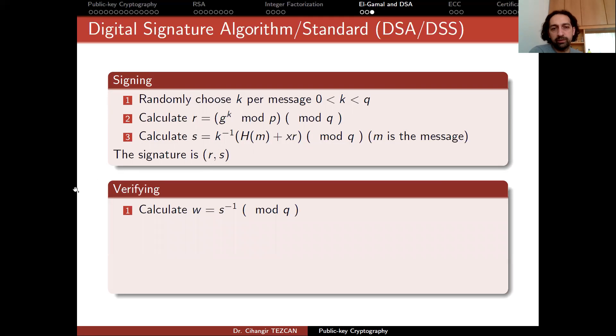The person who wants to verify does the following. They calculate the S inverse modulo Q and obtain W. Then since you claim that you signed this message M and this is your signature, they can also take the hash of it and multiply with W modulo Q and obtain U1. Then they compute R times W modulo Q and obtain U2.